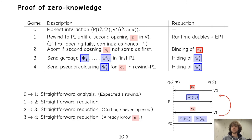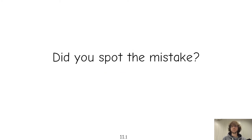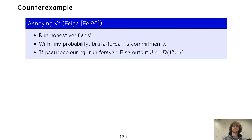So nothing really happened here — but something went wrong. The problem, maybe unsurprisingly, is a runtime explosion. Consider a very simple adversary due to Feige: just run the honest verifier and at the end, with tiny probability, brute-force the prover's commitments. If this verifier sees a pseudo-coloring it will run forever; otherwise it outputs some value according to distribution D.